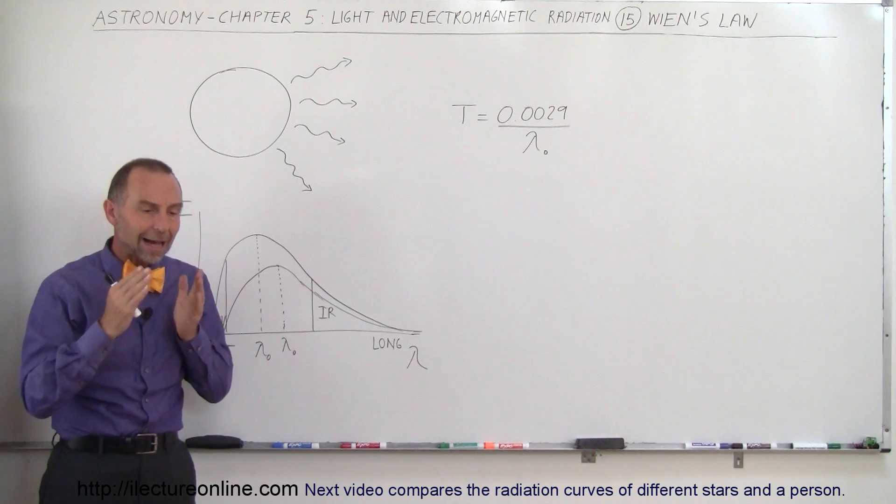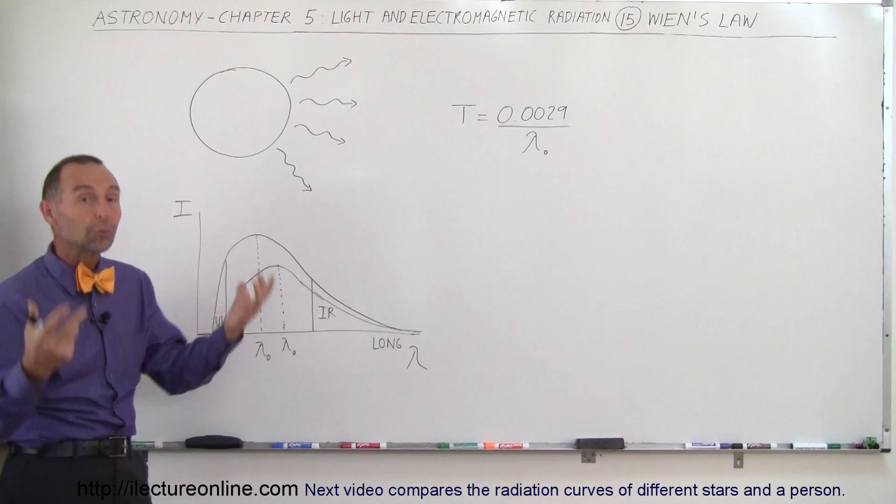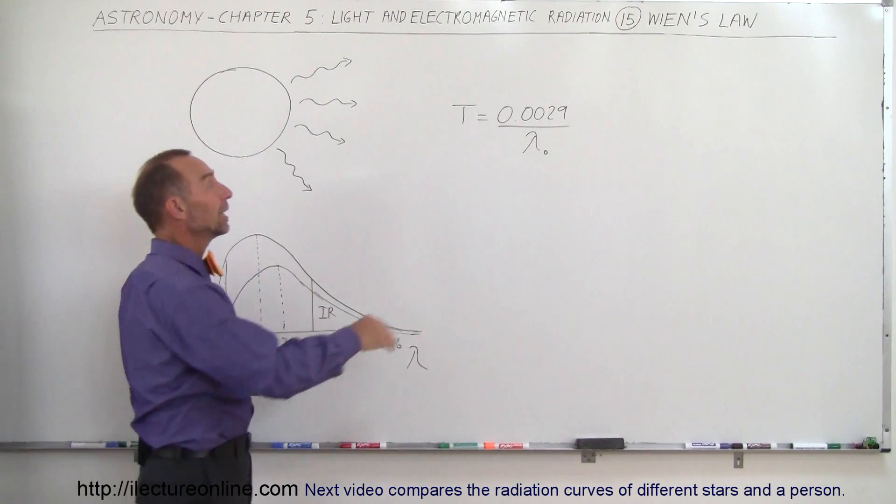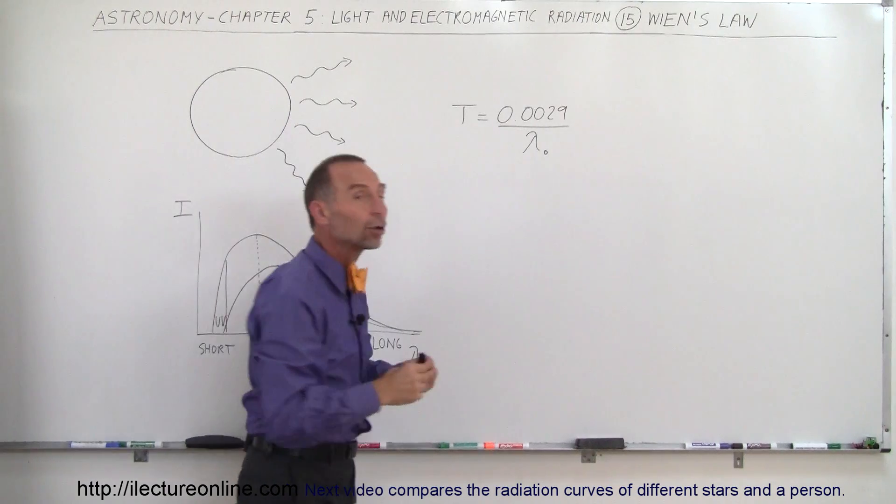We now realize that the kind of radiation coming from an object really depends on the temperature, and Wien was able to formulate that into an equation. He realized that the temperature is equal to some constant divided by the wavelength that occurs the most.